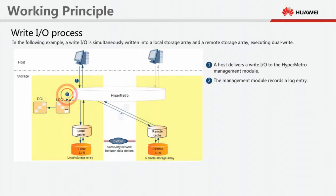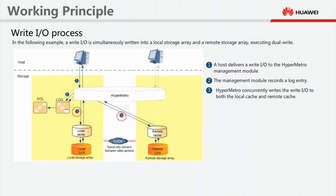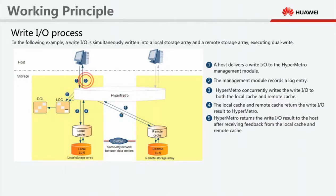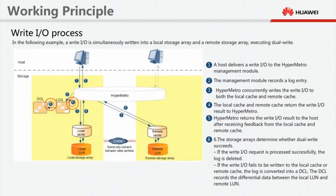Step 2: The management module records a log entry. Step 3: HyperMetro concurrently writes the write IO to both the local cache and remote cache. Step 4: The local cache and remote cache return the write IO result to HyperMetro. Step 5: HyperMetro returns the write IO result to the host after receiving feedback from the local cache and remote cache.